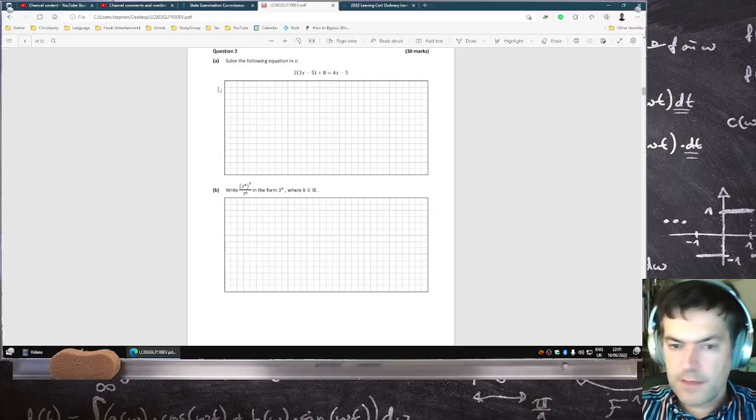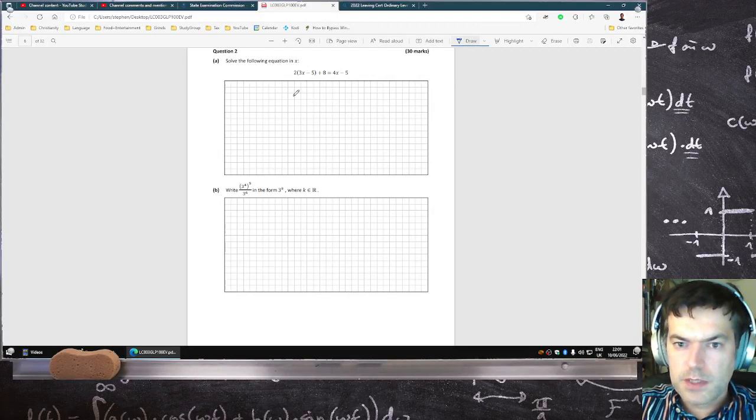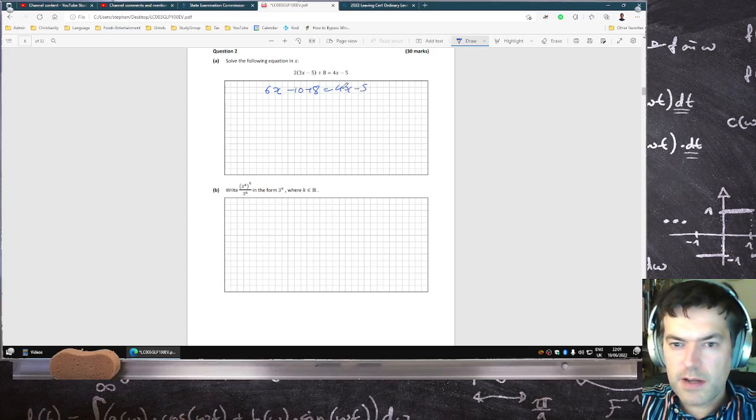Okay, let's solve this equation. Multiplying by 2, 6x minus 10 plus 8 equals 4x minus 5. Take the x's to the left, that's 2x. The non-x's to the right, that's 10 minus 8 is 2. 2 minus 5 minus... ugh! Fractions!